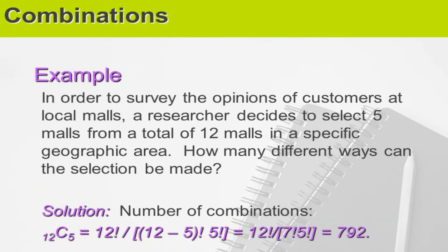In order to survey the opinions of customers at local malls, a researcher decides to select five malls from a total of 12 malls in a specific geographic area. How many different ways can the selection be made? Your N is 12 malls, and we need to select five malls, so R equals five. Therefore, the answer is C(12,5), which equals 792.